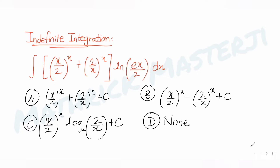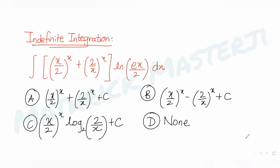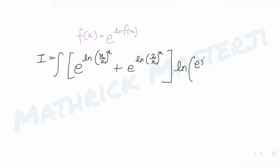The first idea is to write f(x) as e raised to log f(x) to the base e. Using that, I write integral I as: x/2 to the power x becomes e raised to x·log(x/2) to the base e, plus e raised to x·log(2/x) to the base e, multiplied by log(ex/2) to the base e, dx.